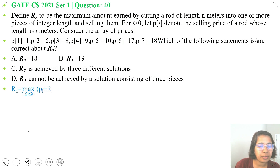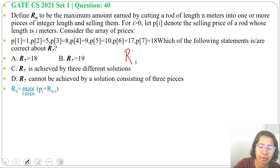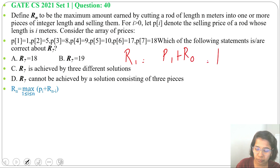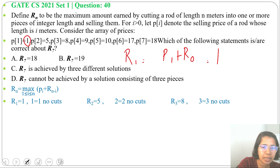The DP formula is: R(N) = max over 1 ≤ i ≤ N of P(i) + R(N−i). First, find R(1): R(1) = P(1) + R(0). Price of 1 meter is 1, so revenue for 1 is 1. Since this is just 1 meter, we cannot cut it, so R(1) = 1.